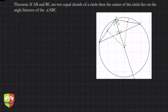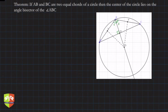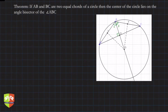We just saw that the theorem works through the GeoGebra demonstration. We could show that if AB and BC are two equal chords of a circle, then the center of the circle lies on the angle bisector of angle ABC. We saw that through a demonstration on a GeoGebra platform. Now we are going to prove this theorem.